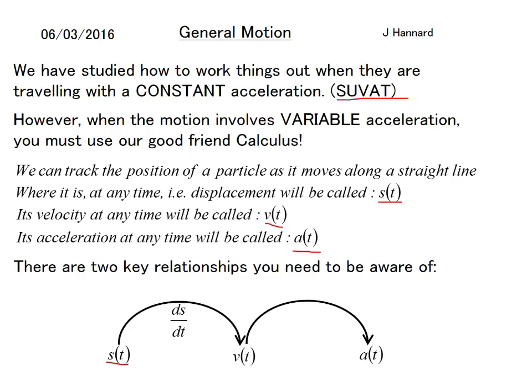If we had s equals t to the power 2, we'd differentiate to get v(t) equals 2t, which would be a constant velocity. If you differentiate displacement you get velocity, and likewise if you differentiate velocity you get acceleration, but you must do this with respect to t.